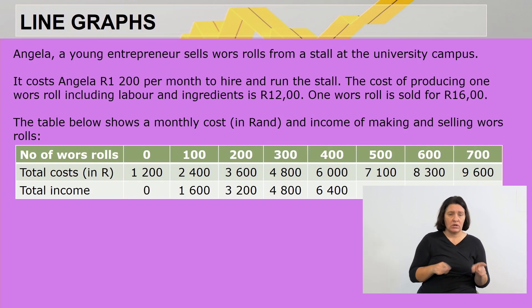Looking at this, we have our cost and we also have what our income will consist of. The table below shows a monthly cost in rand and income of making and selling wors rolls. It's always good to note what your table is all about. In this case, number of wors rolls is 0, 100, up to 700, then we have our total cost in rand and our income.